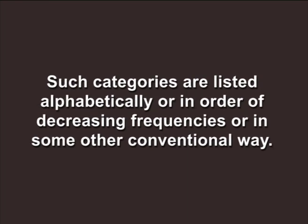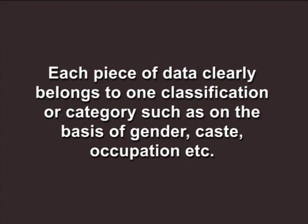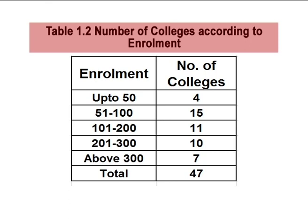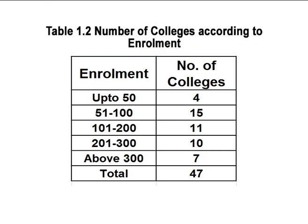Such categories are listed alphabetically, in order of decreasing frequencies, or in some other conventional way. Each piece of data clearly belongs to one classification or category, such as on the basis of gender, caste, occupation, etc. Now consider a set of data consisting of the number of colleges according to enrollment, given in Table 1.2. Colleges with enrollment varying in a specified range are grouped together. For example, there are 15 colleges where the students enrolled are any number between 51 and 100. As the grouping is based on numbers, such data are called numerical or quantitative data.